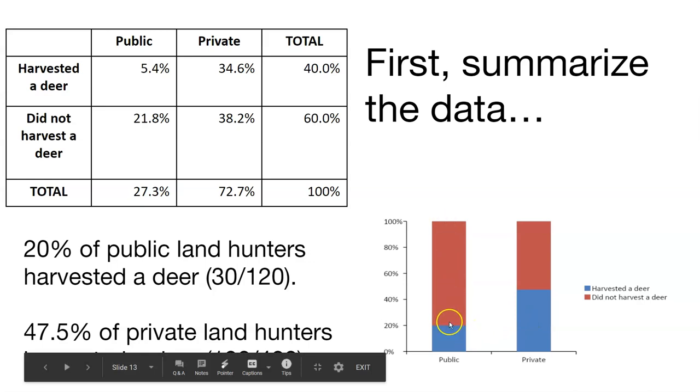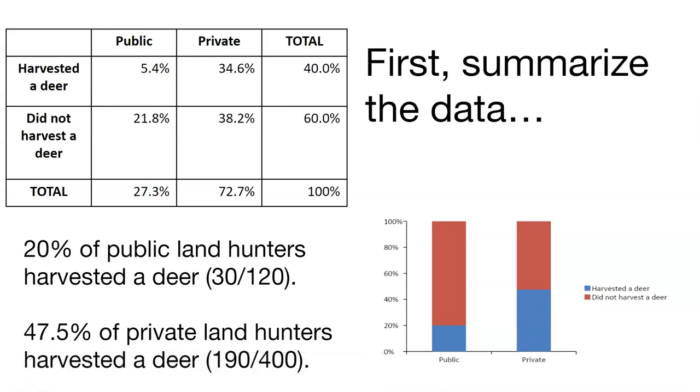Looking at all the people on public lands and all the people on private lands, in blue is the percentage that harvested a deer. And red are those percentages that did not. We can say that 20% of public land hunters harvested a deer. Almost half of private land hunters harvested a deer. This is really what we're testing against in the chi-square test.